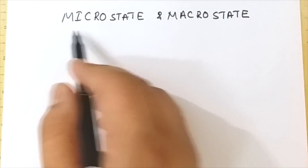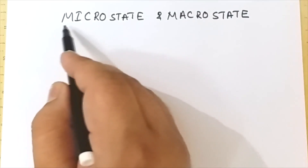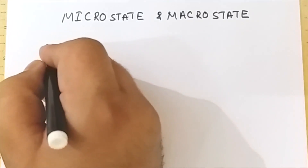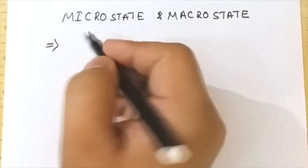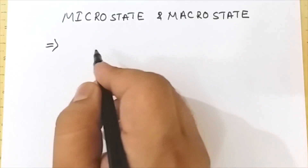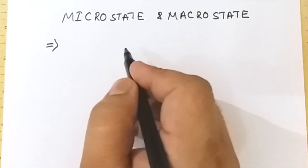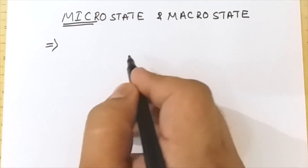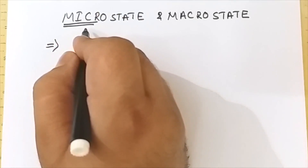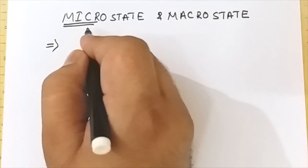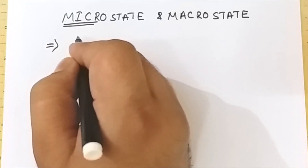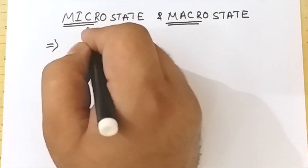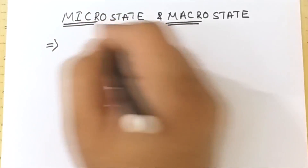Welcome. Today we are going to discuss microstate and macrostate. As the name suggests, micro is related to microscopic properties and macro refers to larger properties or larger states. In statistical thermodynamics, particles exist in phase space, which is divided into a large number of cells. Microstates are the different arrangements of particles present in those cells, and the total properties arising from these particles in the phase space are known as macrostate.